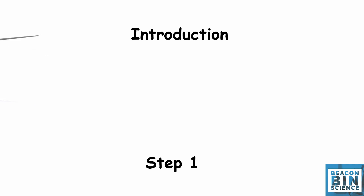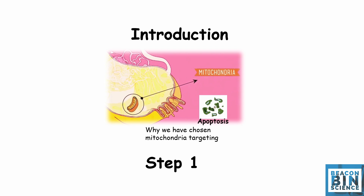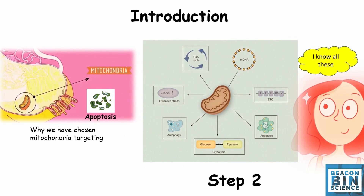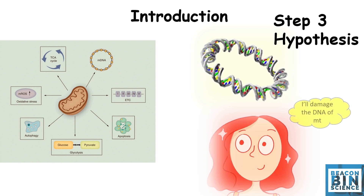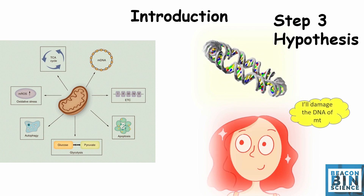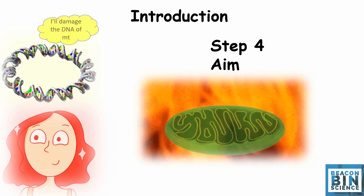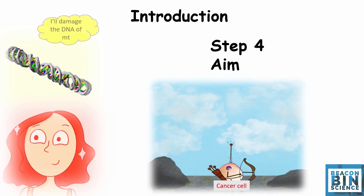Now let's understand this with some graphical representation. Taking the example of targeting mitochondria for cancer treatment — first, give the introduction: what are the importance and functions of mitochondria, and why we have chosen mitochondria to target for cancer treatment. Next, what are the known things about mitochondria? Suppose you are targeting the mitochondrial DNA to dysfunction the mitochondria — then write your hypothesis: how you are going to damage the DNA, and how by damaging the mitochondria you aim to kill the cancer cell. This is how you write the introduction.